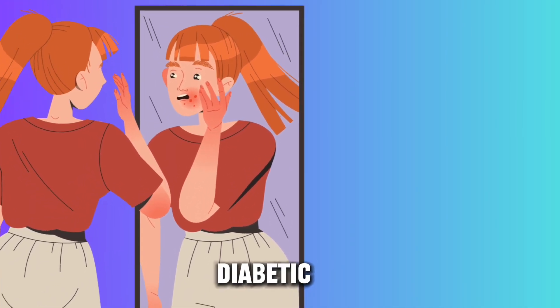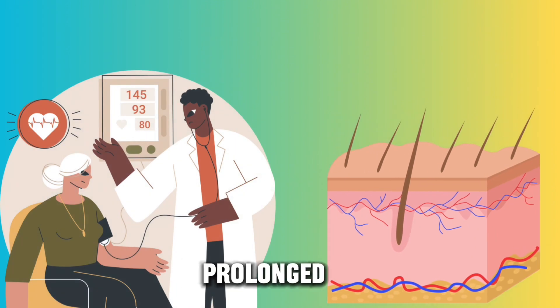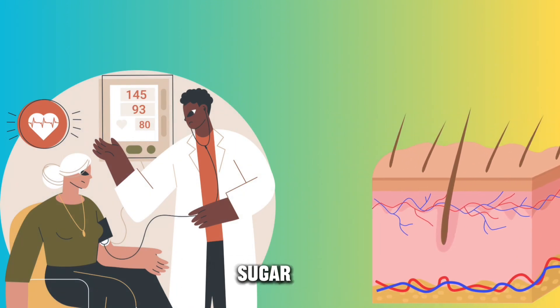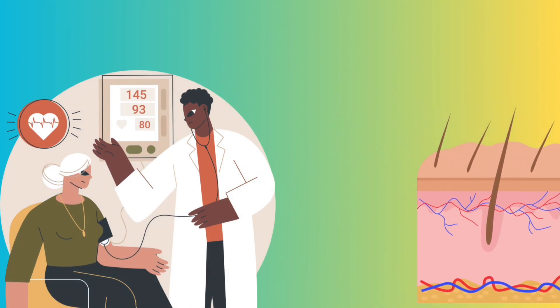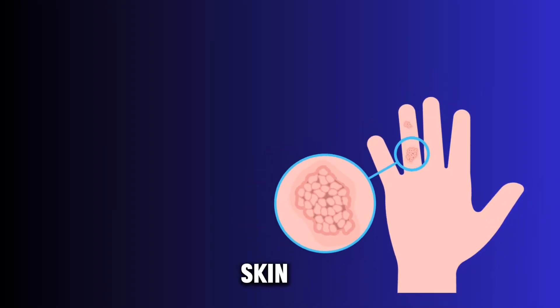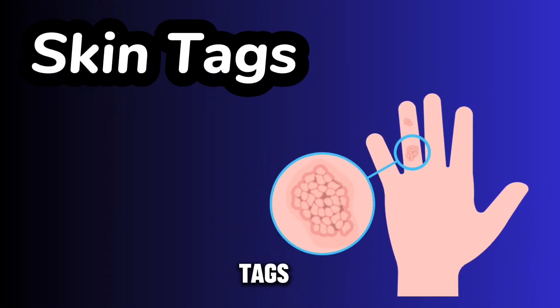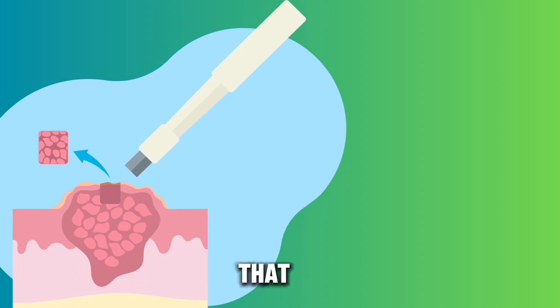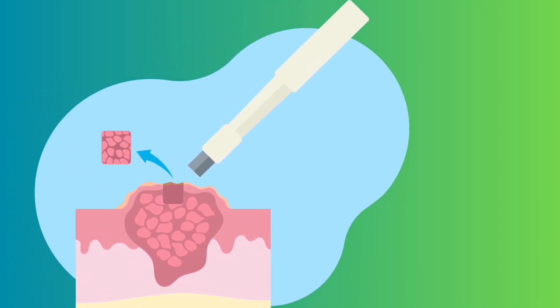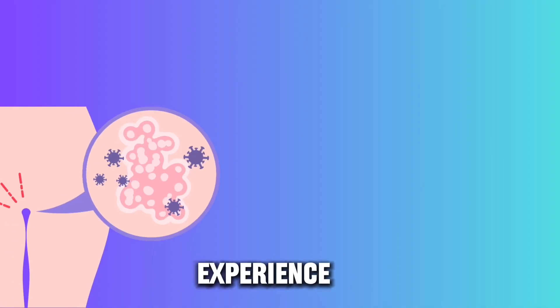Number four: skin tags. Skin tags are small, benign growths that often appear in areas where the skin folds or experiences friction.